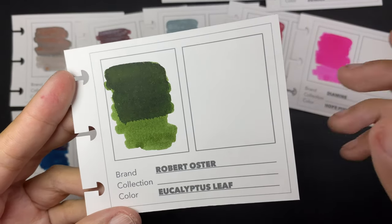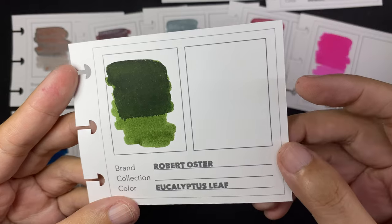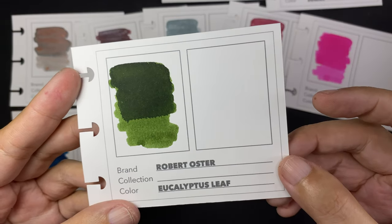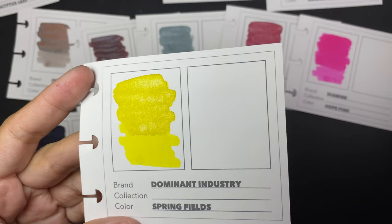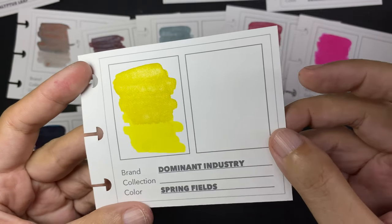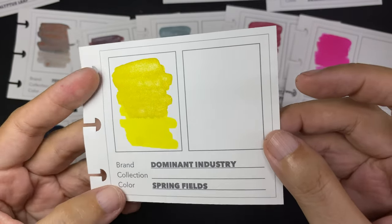Here is Eucalyptus Leaf, also a non-shimmering ink. Springfields is a bright neon yellow with yellow shimmer. Super, super bright.